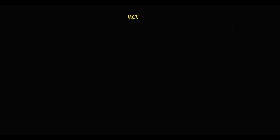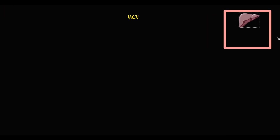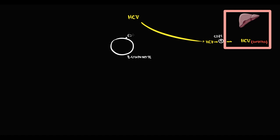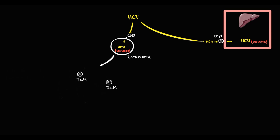Hepatitis C virus primarily targets liver tissue because hepatocytes express CD81 receptors on their surface, through which the virus enters. However, CD81 receptors are also present on B-lymphocytes, allowing hepatitis C virus to enter B-lymphocytes as well. The function of B-lymphocytes is to produce immunoglobulins, and infection both stimulates and disrupts normal immunoglobulin production.